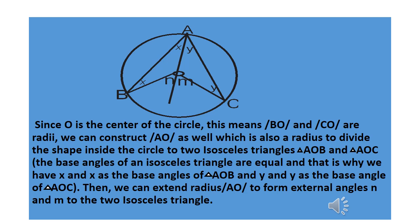Looking at the diagram above, we have points A, B, C with center O. Line BO is a radius because a radius is a line that starts from the center of a circle and touches any part of the circumference. Line BO starts from center O and touches B at the circumference, which means line BO is a radius. Line CO is also a radius.